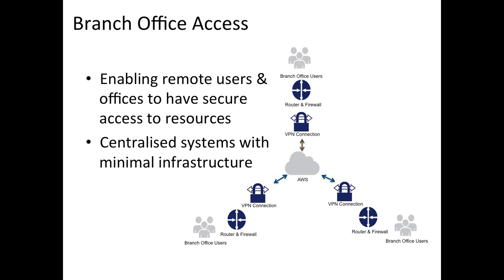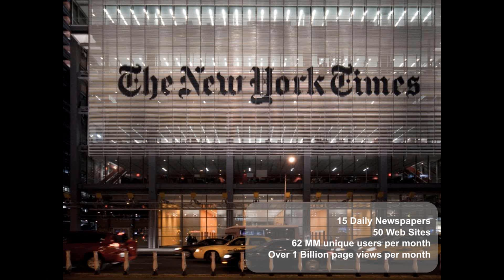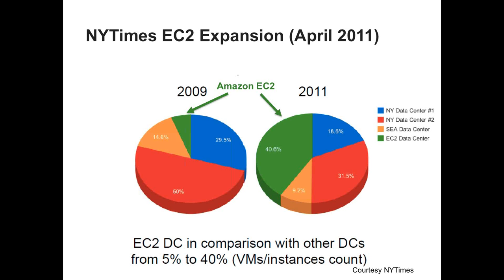So who's using us? I've got a good case study — that would be the New York Times. The New York Times, having been a customer for quite a while, is running 15 daily newspapers, 50 websites, a billion page views per month, and 62 million unique views per month. They actually have four data centers and started using us back in 2009. What's interesting is that one of the four data centers is AWS, and it's grown from about 5% of their total data center to over 40.6%. To their internal users, it just looks like they have four distinct data centers.